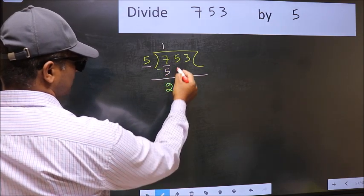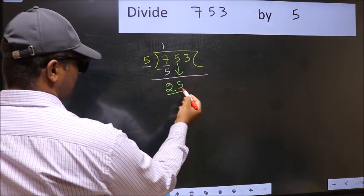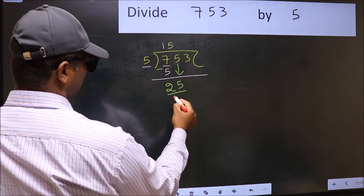After this, bring down the beside number. So 5 down. Now 25. When do we get 25 in the 5 table? 5 fives, 25.